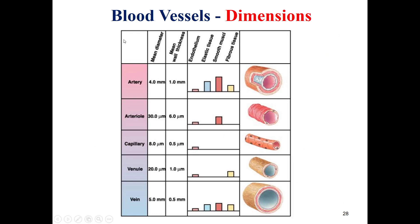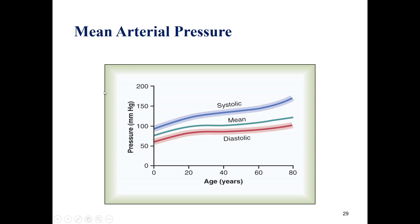Blood vessel dimensions: the mean diameter and mean wall thickness for the different types of blood vessels. The mean diameter of the artery is 4 mm; the arteriole is around 30 micrometers; the capillary is 8 micrometers; the venule is 20 micrometers; and the vein is 5 mm. We can also see the mean wall thickness and the different layers of these blood vessels.